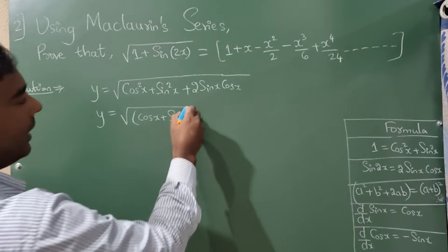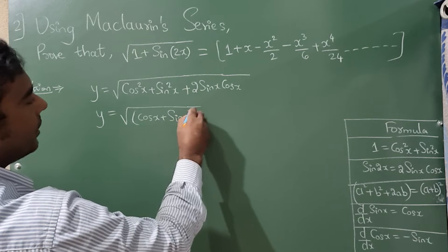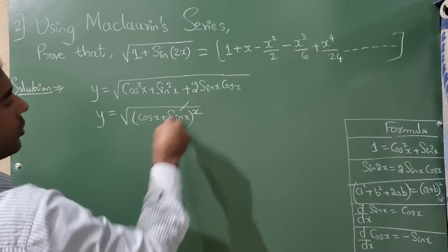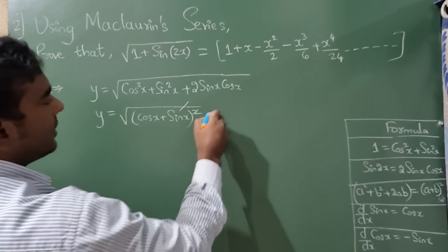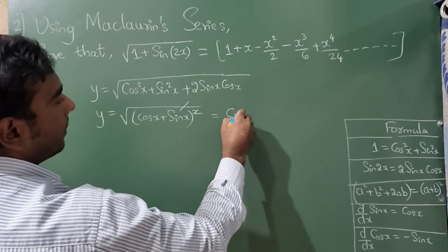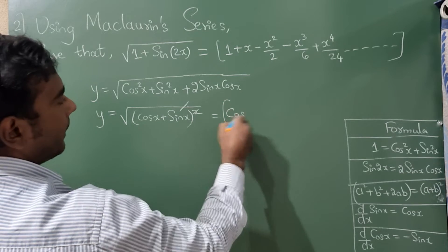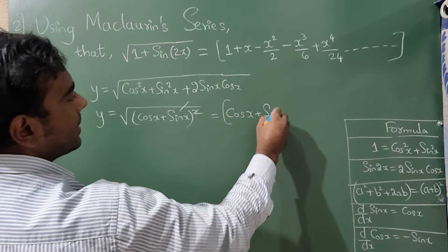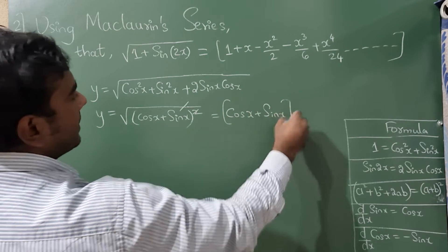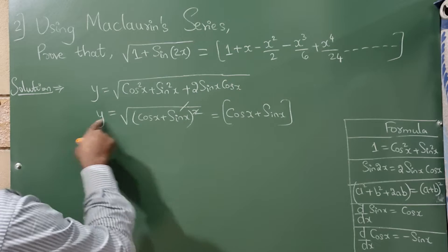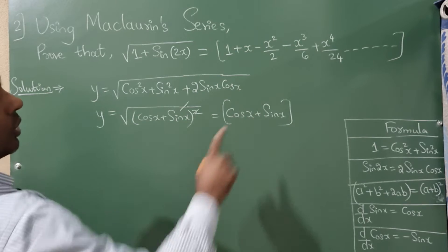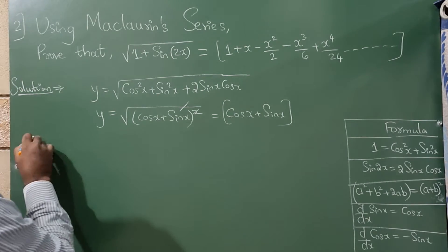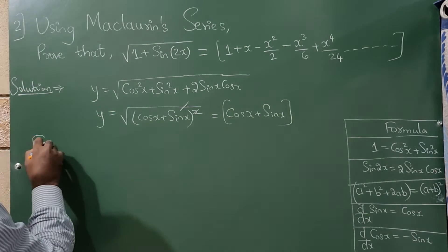Here a = cos x and b = sin x, so under the square root we have (cos x + sin x)². The square root and square cancel, giving y = cos x + sin x. Now we apply the Maclaurin series formula.